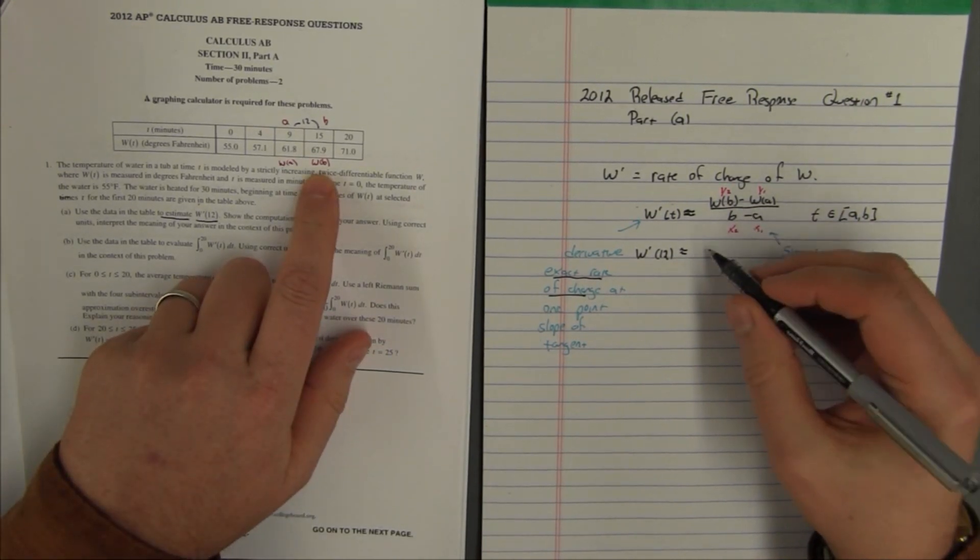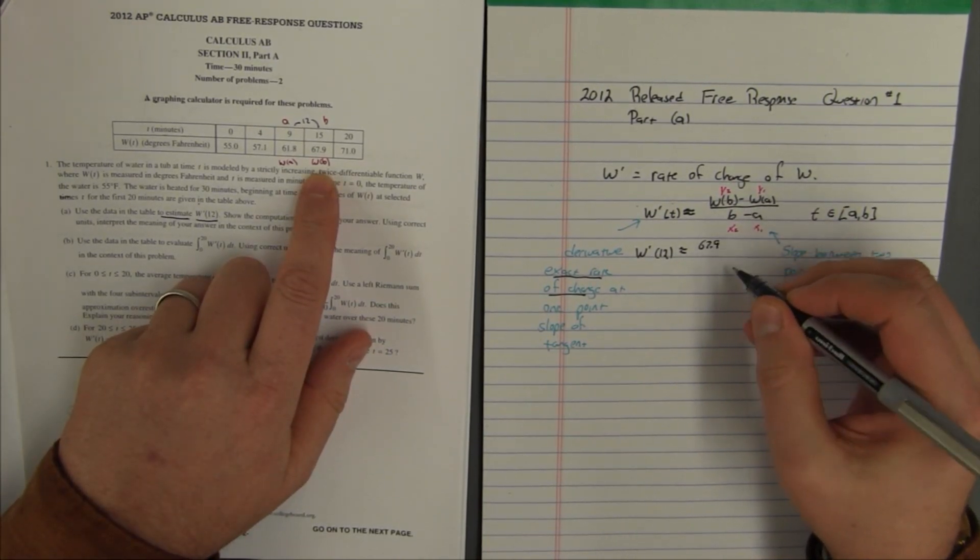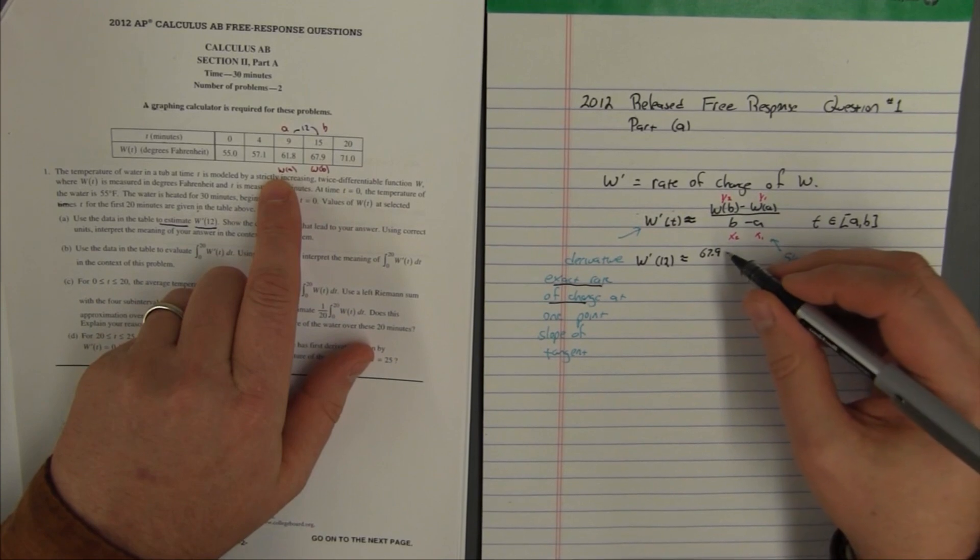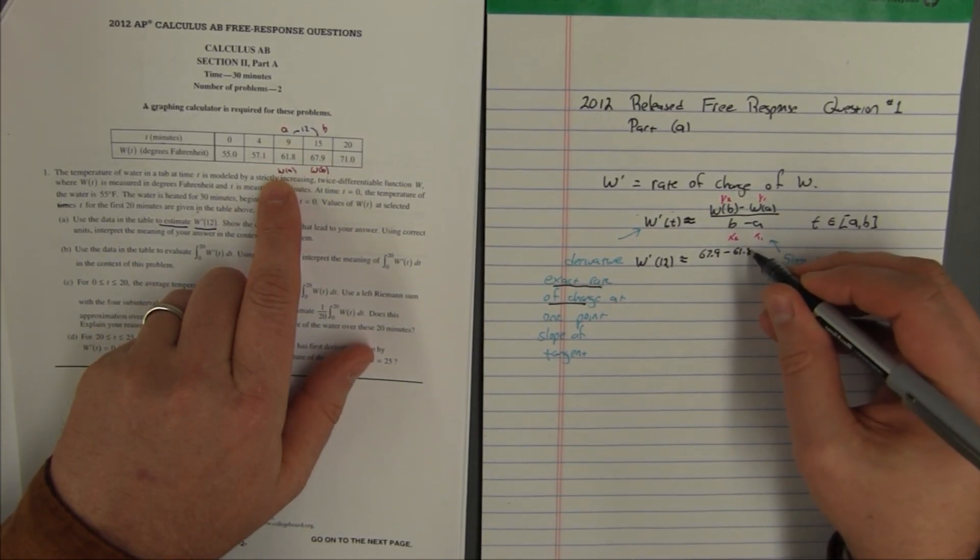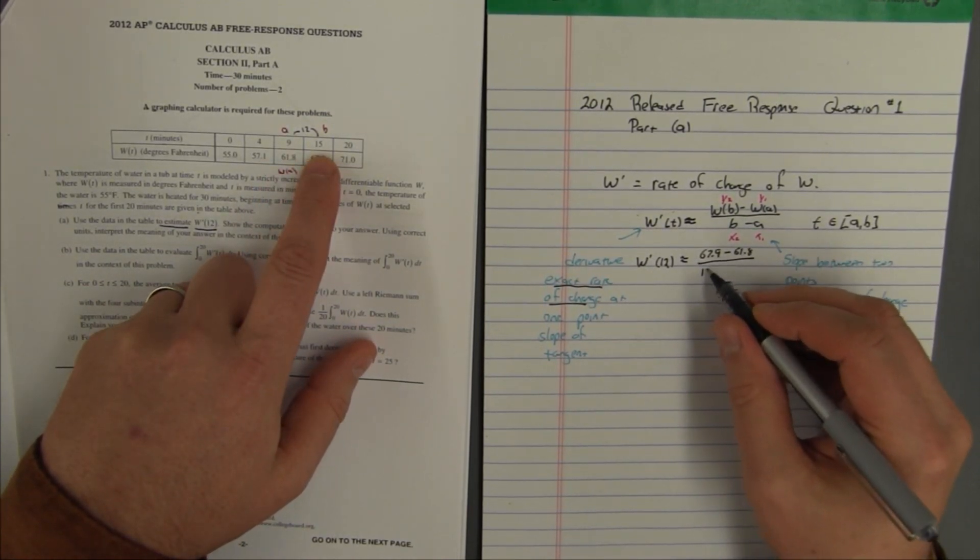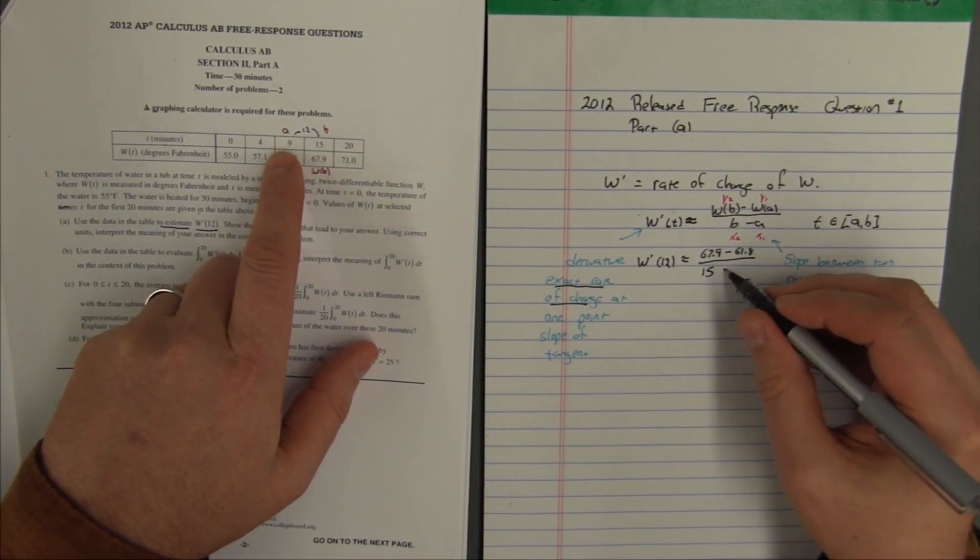This is w of b. So for our w of b, we're going to put 67.9. For our w of a, we're going to put 61.8. For our b, we're going to put 15. And for our a, we're going to put 9.